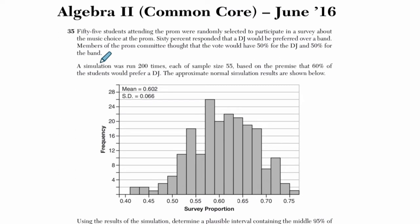Alright, so 55 students attending the prom were randomly selected to participate in a survey about the music choice for the prom. They want to know what music do we play, so they look at 55 students and see what they say. 60% responded that a DJ would be preferred over a band. Members of the prom committee thought the vote would have been 50% for DJ and 50% for the band, so they were surprised.